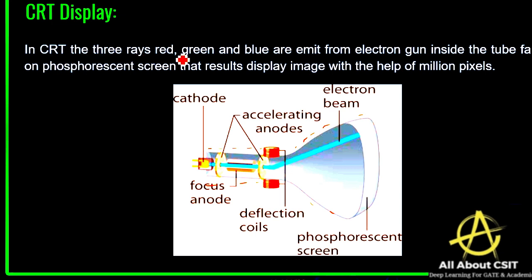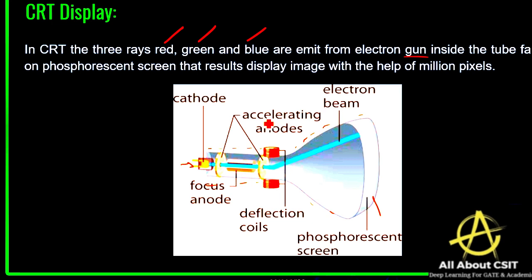In a CRT, three rays — red, green, and blue — are emitted from the electron gun inside the tube and fall on the phosphorescent screen, displaying an image with the help of millions of pixels. In the diagram you can see: a cathode, a focus anode, accelerating anodes, deflection coils, and an electron beam touching the phosphorescent screen.